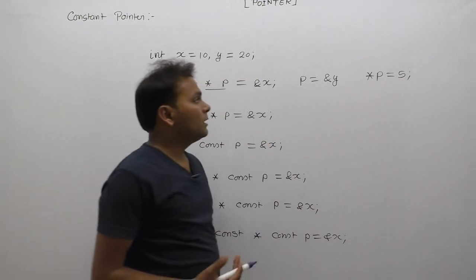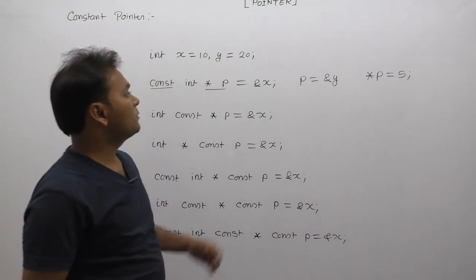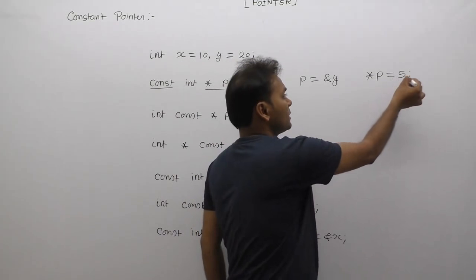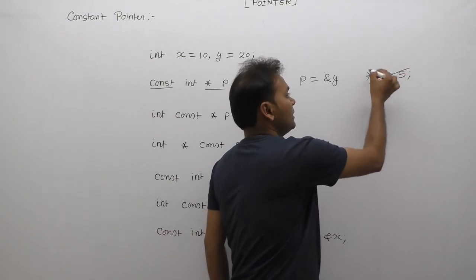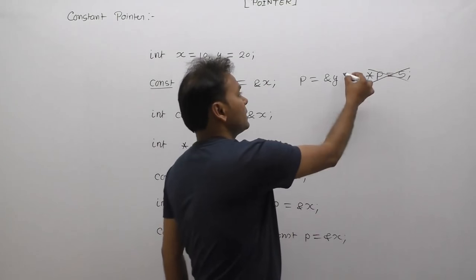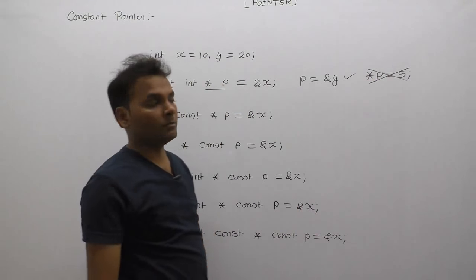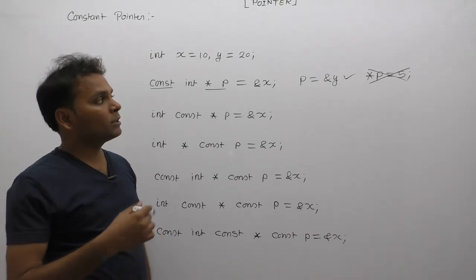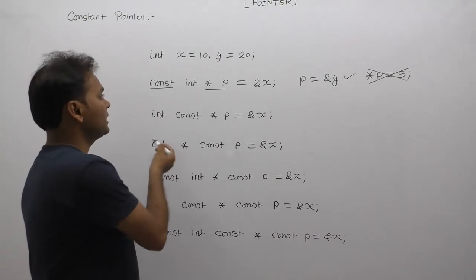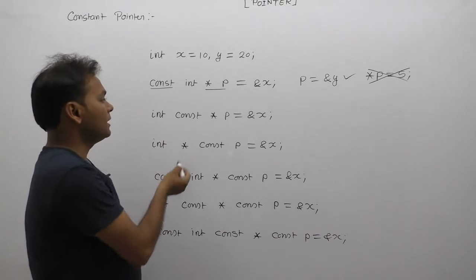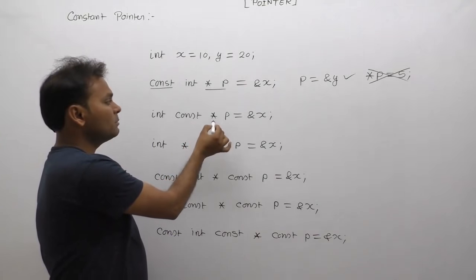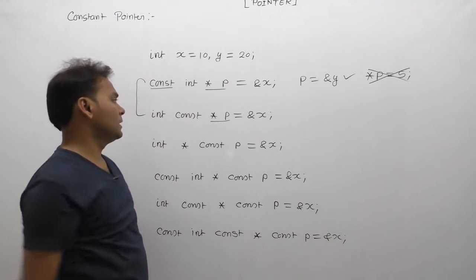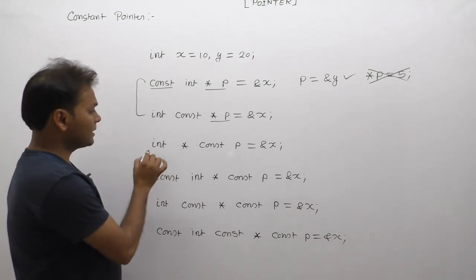This is a valid case — the valid assignment means p can be assigned another address, and star p can be assigned other values. Changing star p is invalid because it is a constant location. The second case, when the const keyword is applied just before star p, both cases have the same meaning.